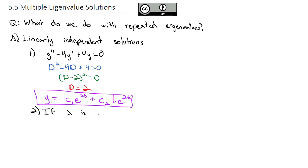Here's what we're going to do to solve the repeated eigenvalue problem. If lambda is a repeated, specifically a double root eigenvalue, and v is the eigenvector,